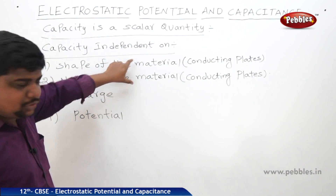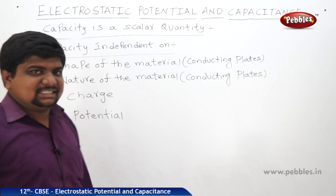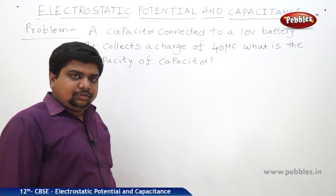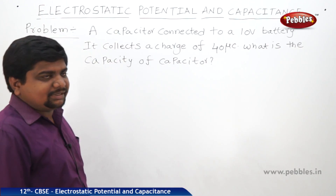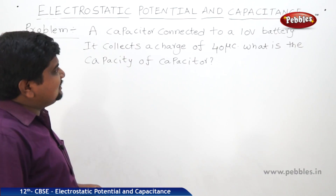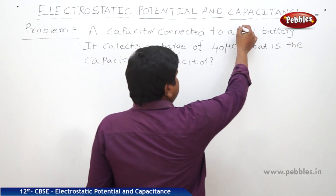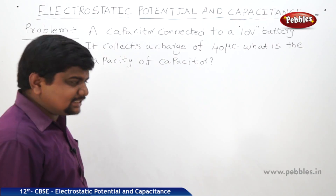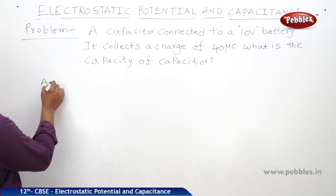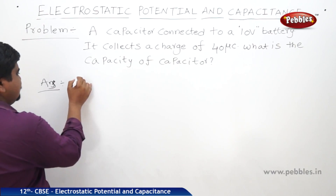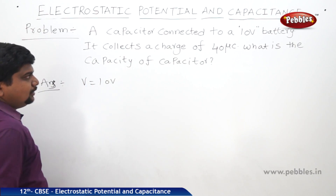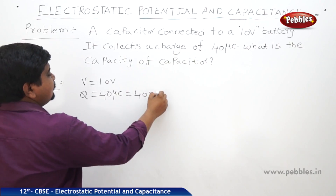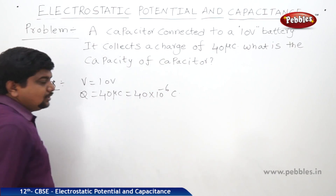The definition itself proves the first two independence factors, and the remaining two will be proved in the next part. Now we will solve a problem based on capacitance. A capacitor connected to a 10-volt battery collects a charge of 40 microcoulombs. What is the capacitance? Given: potential difference V = 10 volts, charge Q = 40 microcoulombs = 40 × 10⁻⁶ coulombs.